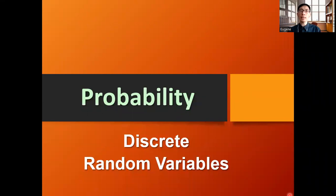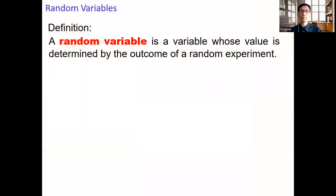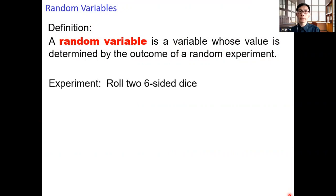Hello everyone. In this video we talk about discrete random variables. First, what is a random variable? A random variable is a variable whose value is determined by the outcome of a random experiment.